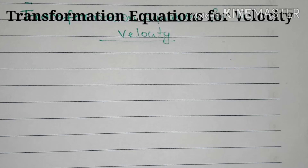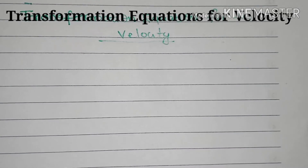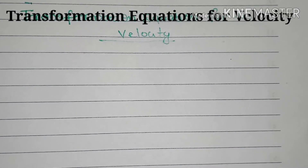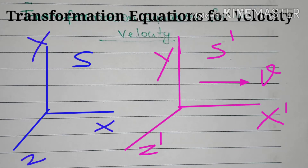Velocity also has a transformation equation, so we are discussing it here. As usual, we consider two inertial frames S and S dash. The S dash frame is moving with a constant velocity V with respect to the X axis.